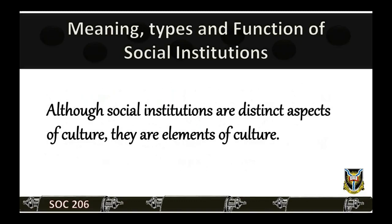A distinctive feature of society is the existence of a number of institutions. Social institutions are the organized ways each society develops to meet their basic needs.